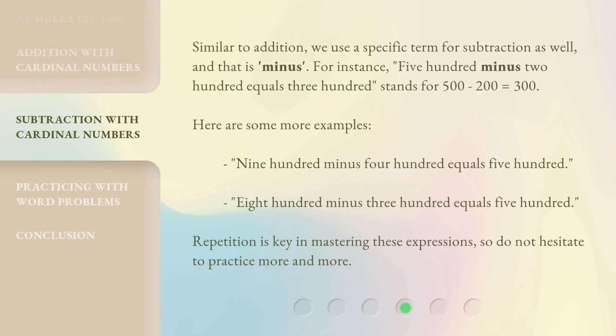Similar to addition, we use a specific term for subtraction as well, and that is "minus." For instance, 500 minus 200 equals 300 stands for 500 minus 200 equals 300. Here are some more examples: 900 minus 400 equals 500; 800 minus 300 equals 500. Repetition is key in mastering these expressions, so do not hesitate to practice more and more.